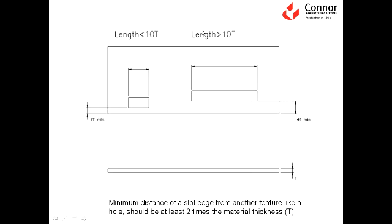When the length of your slot is greater than ten times, then you want to keep your wall thickness about four times the material thickness away from the edge. And what that does is it allows you to design a cost-effective stamping. If you needed this slot to be right over here, it can be done, but it's a costlier tool, a higher maintenance part.